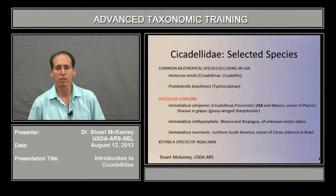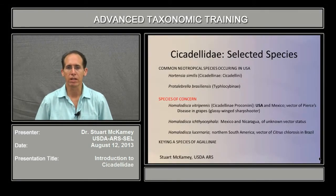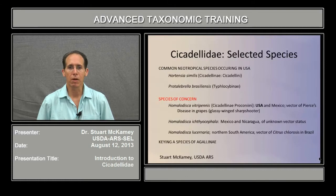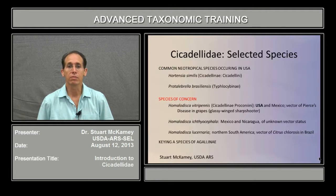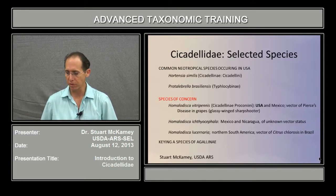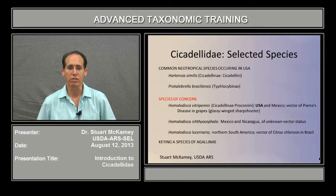Hi, I'm Stu McKamey of the USDA Systematic Entomology Lab. In this presentation, we're going to go over selected species of Cicadellidae. We'll look at some common neotropical species that also occur in the USA that you're likely to come across, and some species of concern that include important vectors of grape and citrus, and then we'll key one species of Agallia to give you an example of what these keys are like.